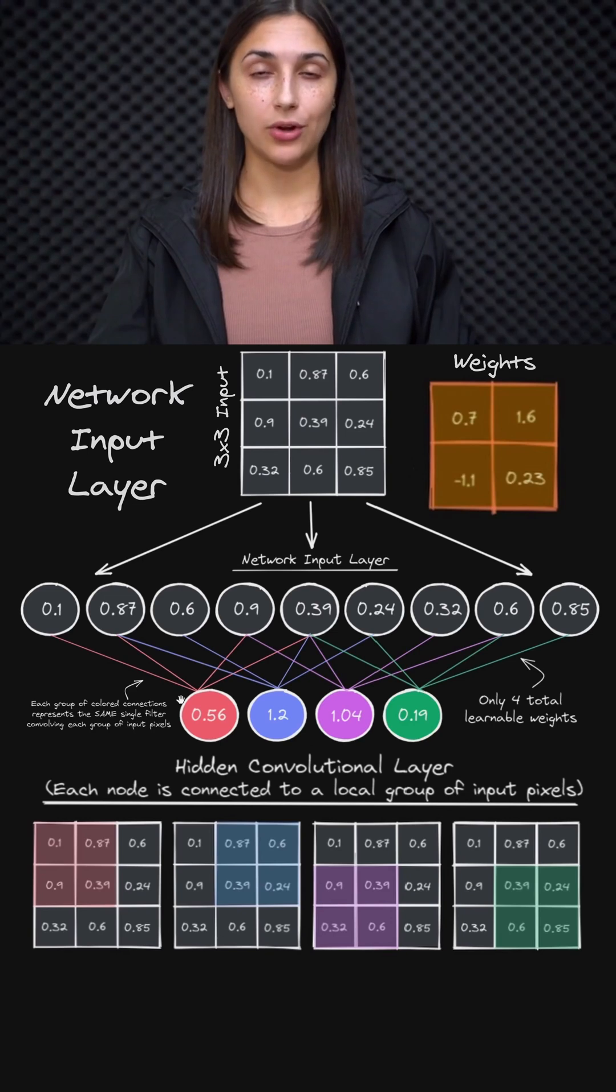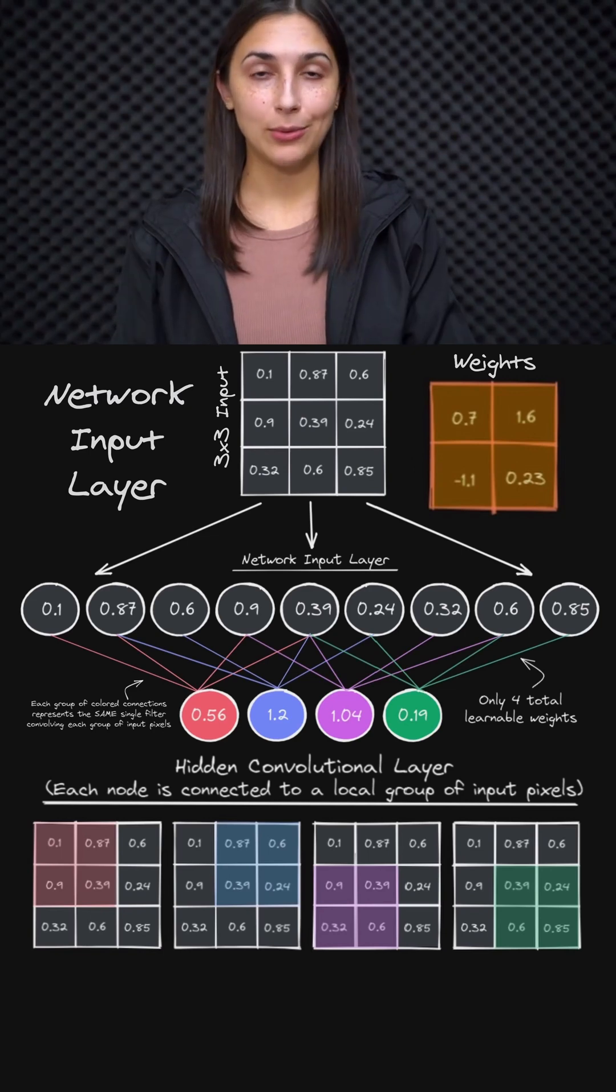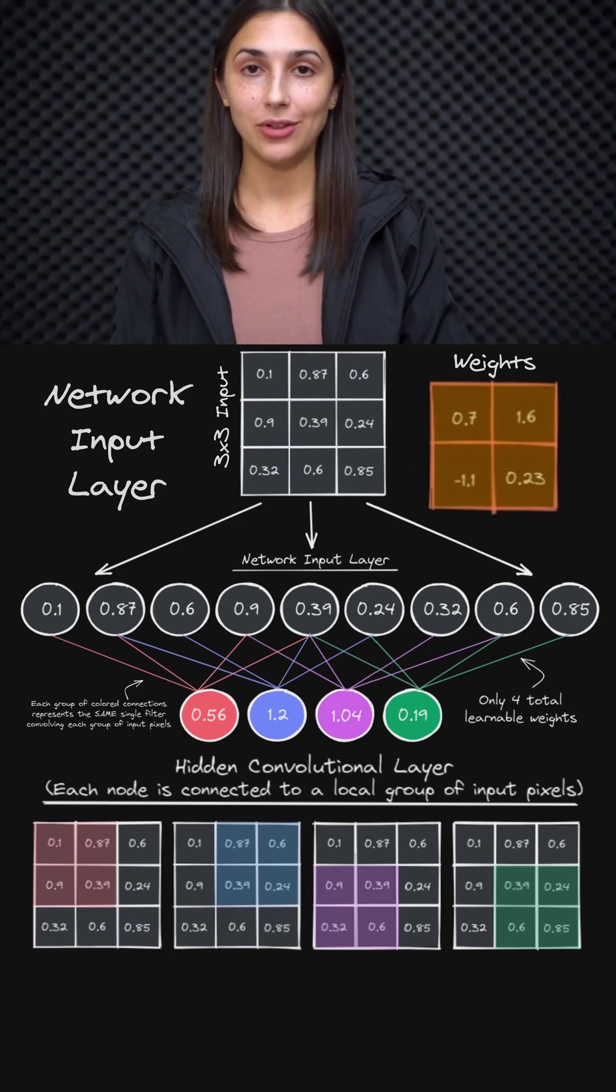And it's due to this that convolutional layers are referred to as sparsely connected, whereas fully connected layers are referred to as being densely connected. So we should now be able to see the more direct comparison between fully connected layers and convolutional layers and see how they're actually much more similar to each other than what they might appear.